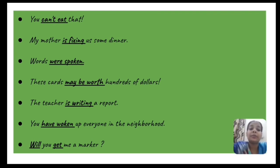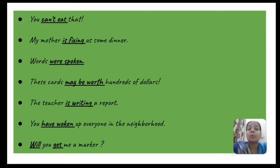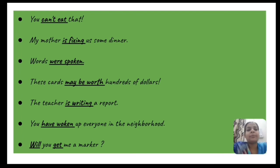'Will you get me a marker?' — 'will' is an auxiliary verb used here as an interrogative word, and 'get' is the main verb, so 'will get' is the verb phrase. I hope you have understood this well — let's check how much you have understood.